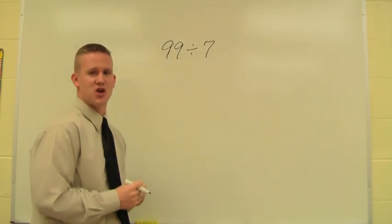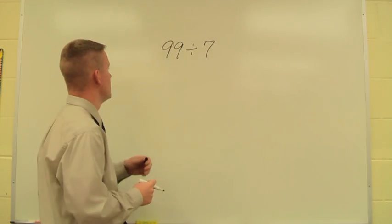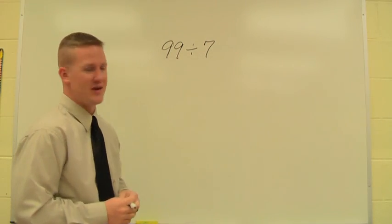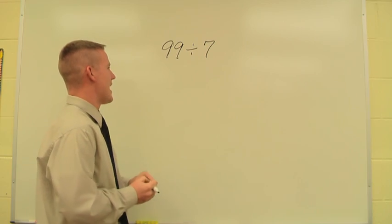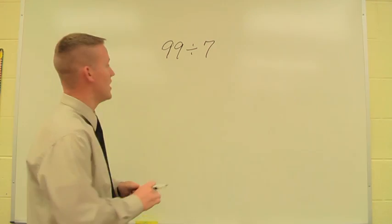Here's another problem we can use the friendly number division strategy for: 99 divided by 7. Now this is a situation where I can kind of tell that my 7 may not go equally into the 99, but we can still use the same strategy.